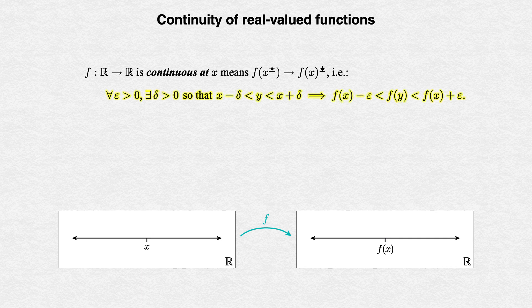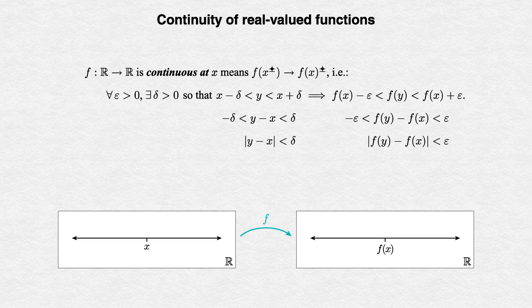Looking at the logical definition, if we use a little bit of algebra, we can find our metric on the real line at work in this definition, just as we did for convergence of sequences. Subtracting x and f(x) from the inequalities as appropriate, then recognizing that our inequalities can be expressed in terms of absolute values, we should immediately recognize our metric in the real line at play, taking the distance between x and y, and between f(x) and f(y).